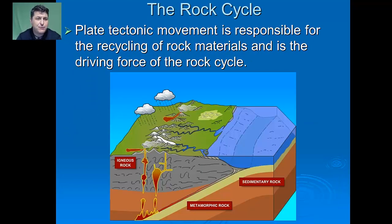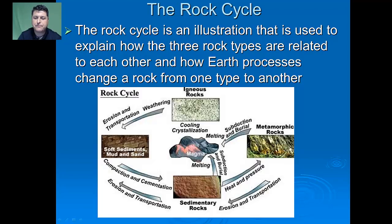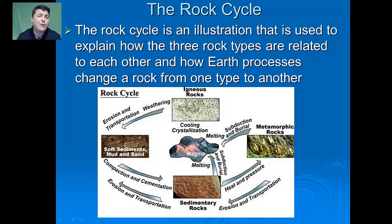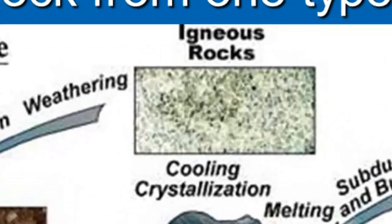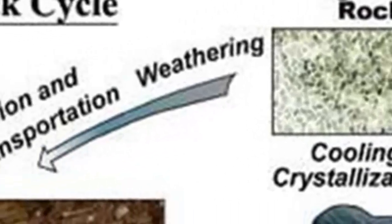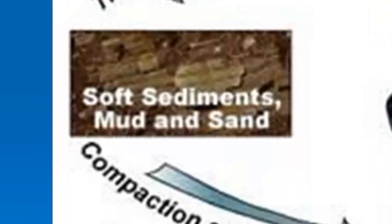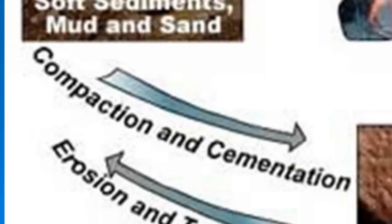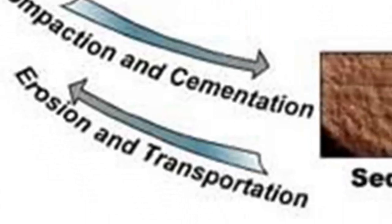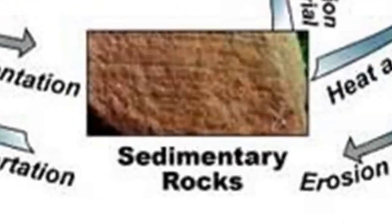Plate tectonic movement is responsible for the recycling of rock material and is the driving force behind the rock cycle. The rock cycle illustrates how the three rock types are related to each other and how Earth processes can change one rock type into another. For example, an igneous rock can become sedimentary through erosion, weathering, transport of sediments to a body of water, and then compaction and cementation.